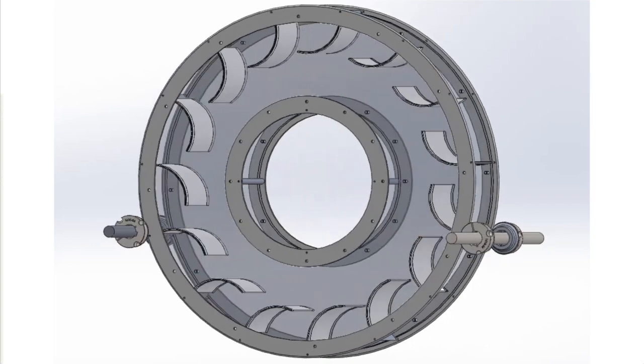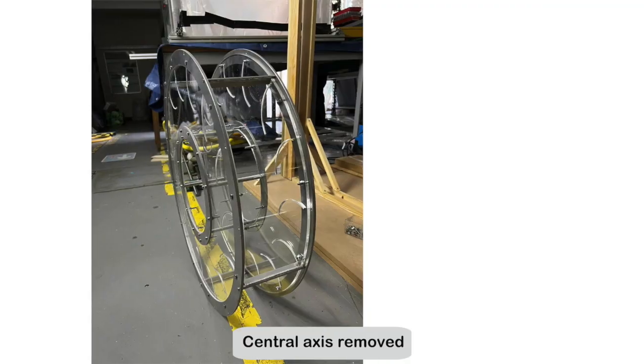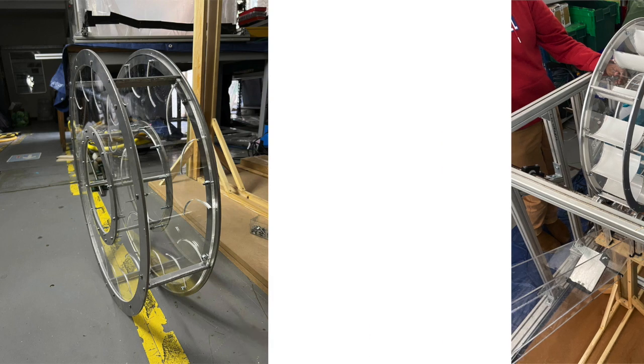Secondly, the external metal frame of the water wheel was innovated to withstand higher stresses and allows the central axis to be removed completely, saving material and weight.